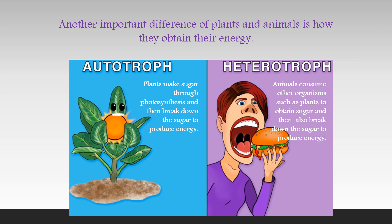Plants produce sugars through photosynthesis and then break down their sugar to produce energy. Animals consume other organisms, such as plants, to obtain sugar, which they then also break down to produce energy.